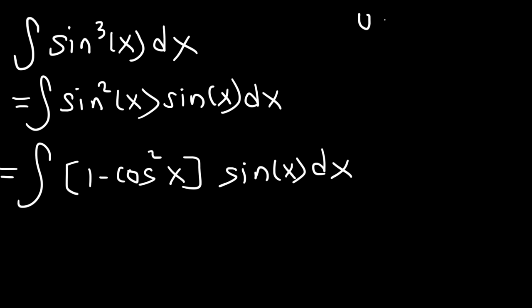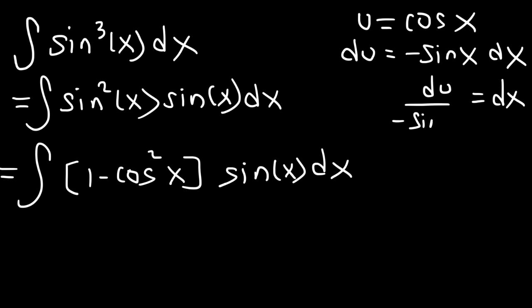We're going to make u equal to cosine x. And du is going to be negative sine x dx. And solving for dx, that's going to be du divided by negative sine x.